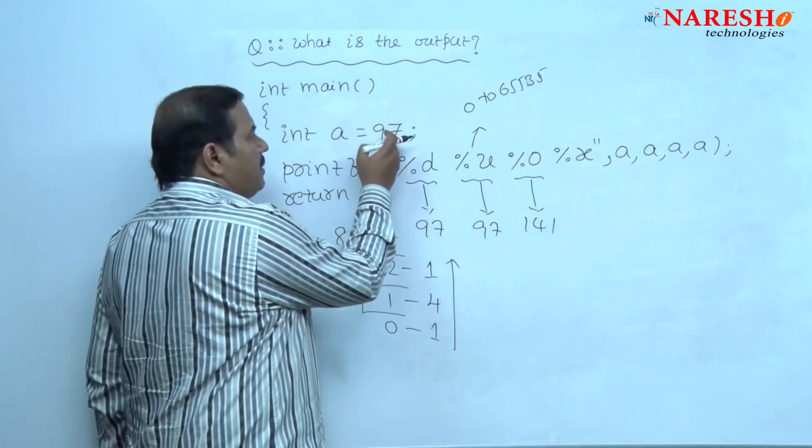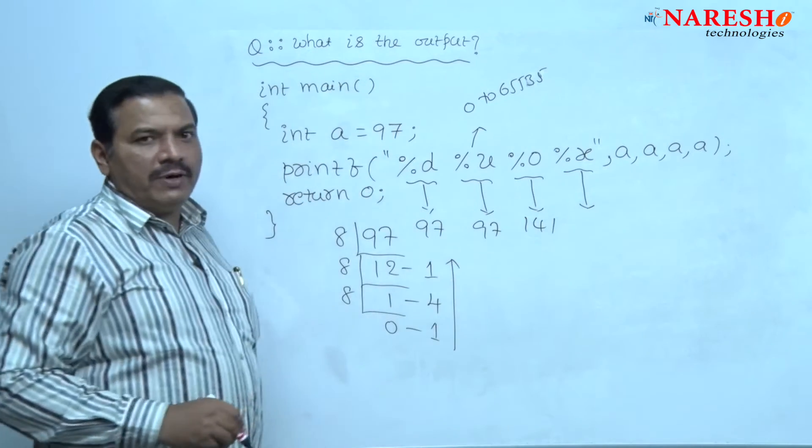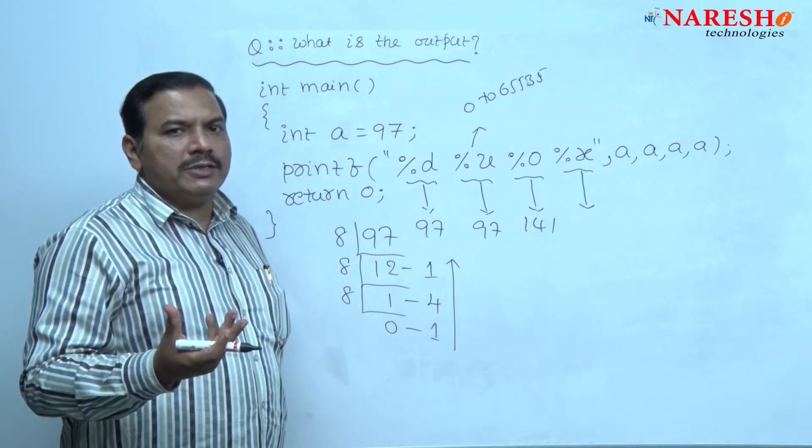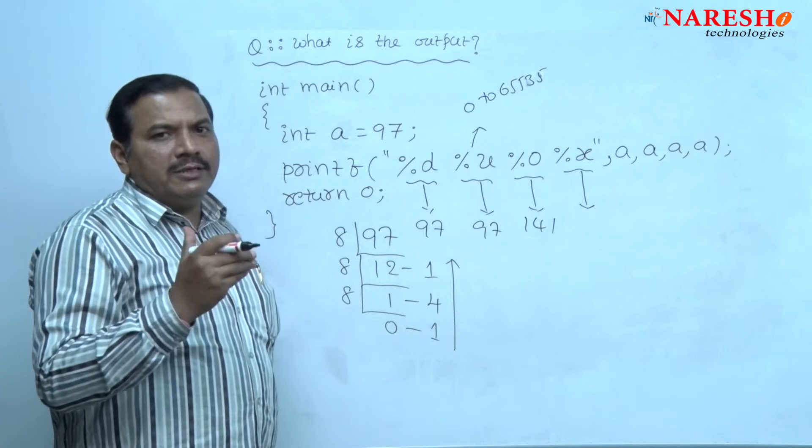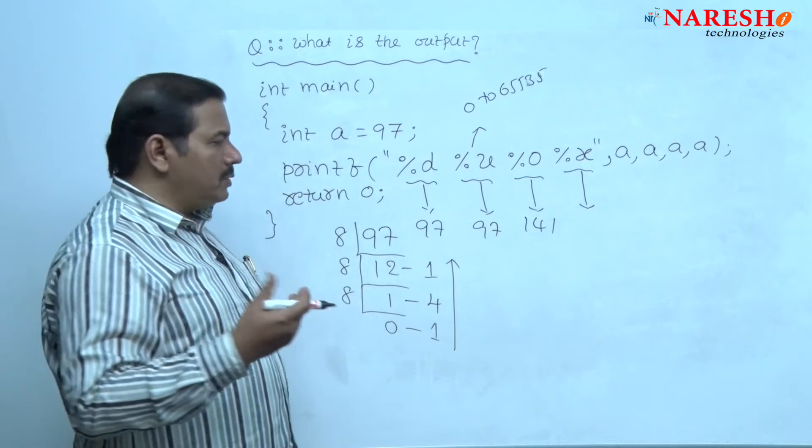Now, this decimal number 97 is printed in hexadecimal format. Just convert the decimal value 97 into hexadecimal. Divide this 97 with 16 and collect the remainders. Write down those remainders from bottom to top.